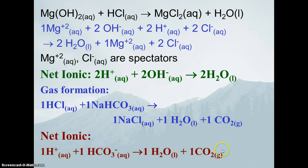This is technically an acid-base reaction, but the net ionic equation also produces carbon dioxide gas, not just water. This example shows that not all acid-base neutralization reactions have the same net ionic equation. However, most of them follow the H⁺ + OH⁻ pattern — these are the most basic type of acid-base neutralization reactions.